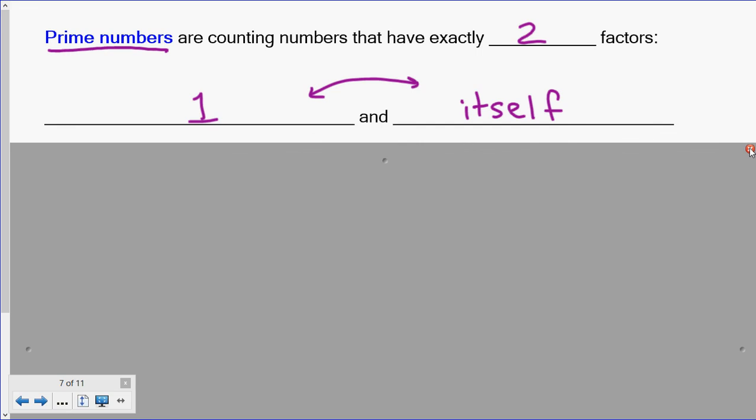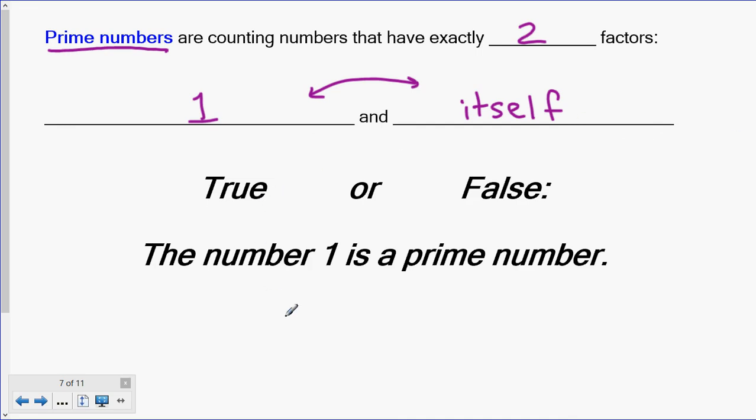True or false? The number 1 is a prime number. Does the number 1 have exactly 2 factors, 1 and itself? How can I make a product of 1? I believe the only way to do it is 1 times 1. So does the number 1 have 2 factors? No. It has 1 as a factor, and it has itself as a factor, but those happen to be the same thing. False, 1 is not prime, because it only has 1 factor.